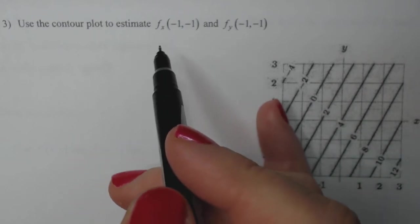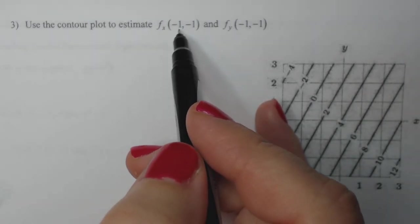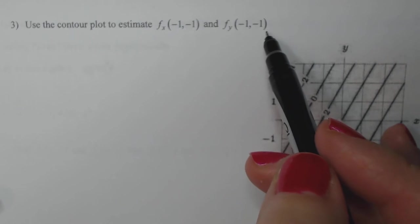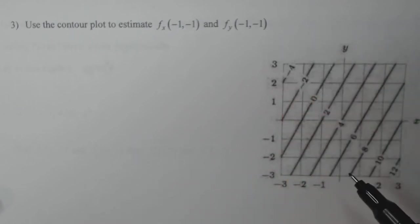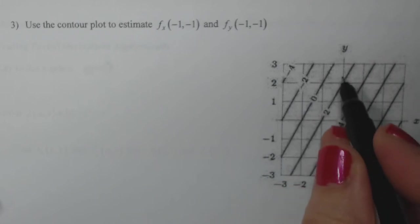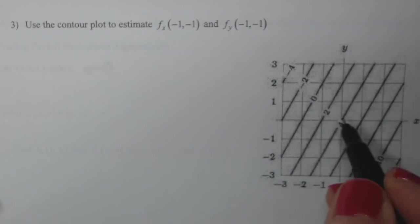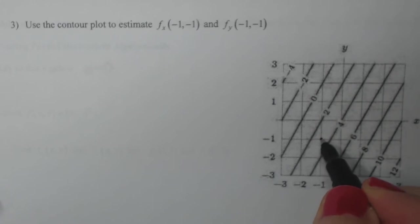I'm going to use the contour map to estimate f sub x at negative one, negative one and f sub y at the same point. So the first thing you want to do is go look at the graph at that point. Here's my x axis, here's my y axis, and they're labeled down here. So negative one for x and negative one for y is right there.